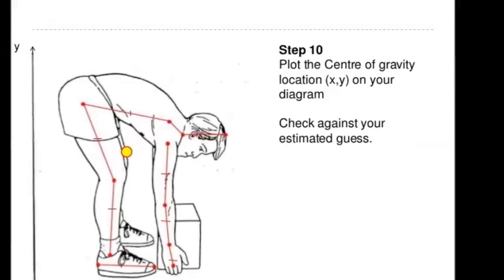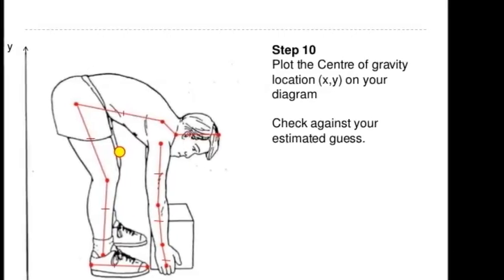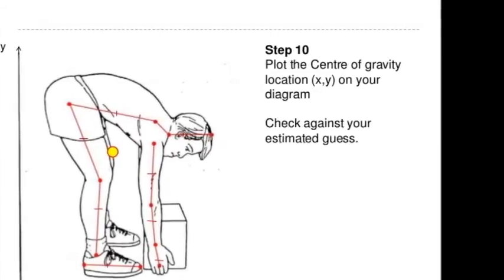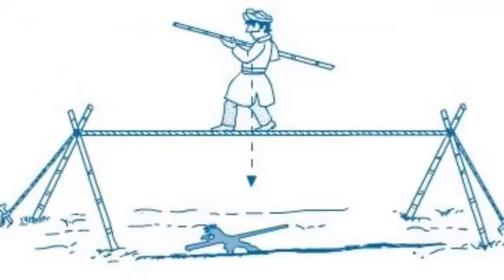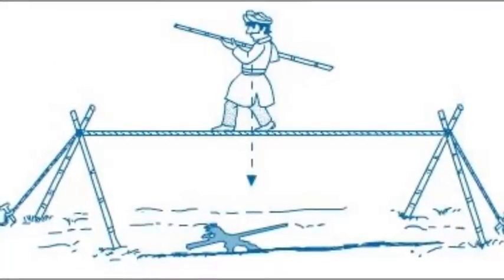Check your math if you get a tiny answer. If you picked one end of the system as your datum, a tiny answer puts the center of gravity right next to one end. This can be the right answer, but it's often the sign of a mistake.